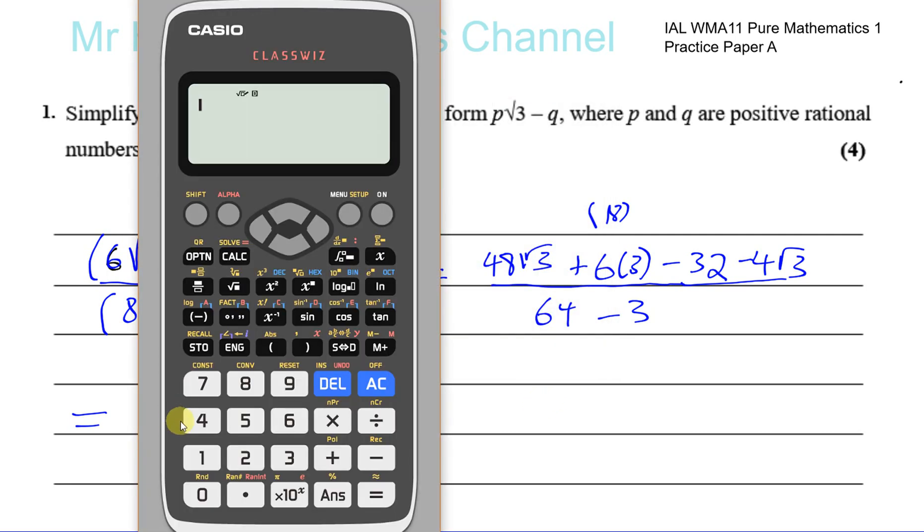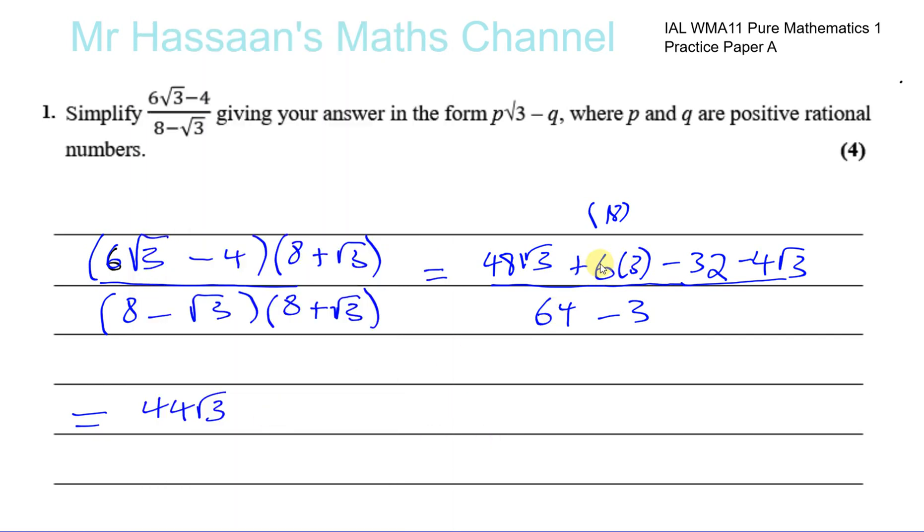18 minus 32, that's going to be minus 14, sorry, so that's minus 14. 18 minus 32, yes, minus 14, so you have minus 14, not 24. And that's all over 64 minus 3, which is 61.